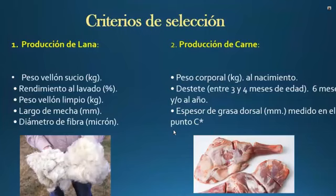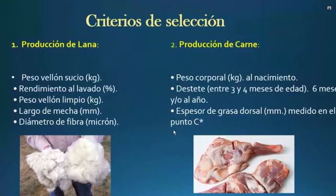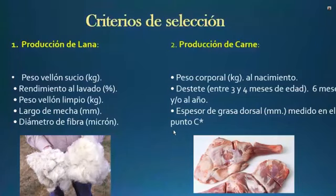En la producción de lana, aquellos productores que se dedican a ella evalúan estas características en el criterio de selección: el peso del vellón sucio, el rendimiento al lavado, el peso del vellón limpio, el largo de la mecha y el diámetro de la fibra. Estos son parámetros utilizados en otros países que aprovechan más la lana, y sirven para seleccionar según el objetivo de producción de lana.